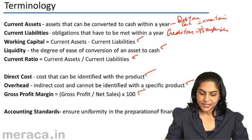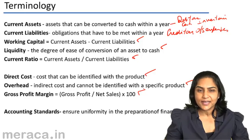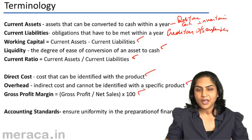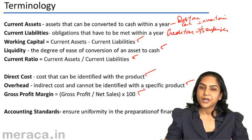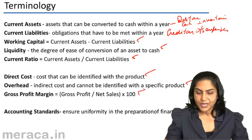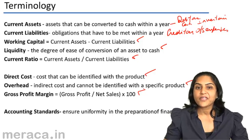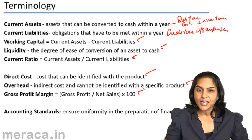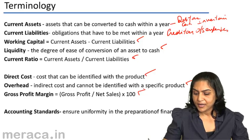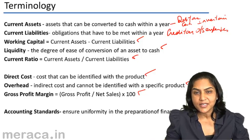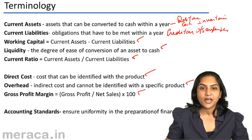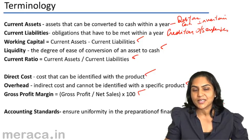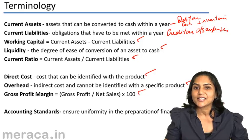Accounting standards are certain broad guidelines framed by an approved authority in every country for the preparation and presentation of financial statements. Internationally, we are moving towards one set of accounting standards followed by all countries — known as IFRS, or International Financial Reporting Standards, which we will study in detail at a later date.